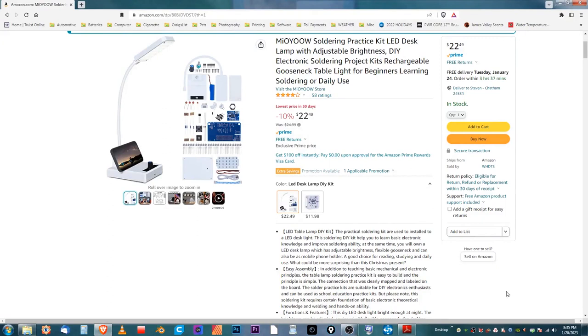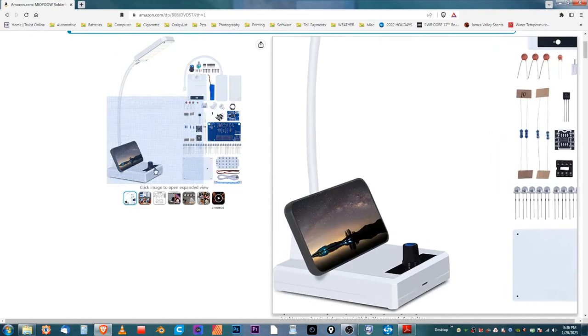Hello and welcome to Outside In. My name is Steven and we're going to be looking at a do-it-yourself project kit that I purchased on Amazon. Here it is - a Mioyao soldering practice kit LED desk lamp with adjustable brightness, DIY electronic soldering project kit, rechargeable gooseneck table light for beginners learning soldering or daily use. This is the lamp and it is dimmable. This is what it comes with - all the parts and pieces. I'll be putting a link in the description. Let's just get going and do it.